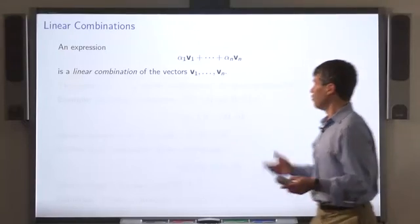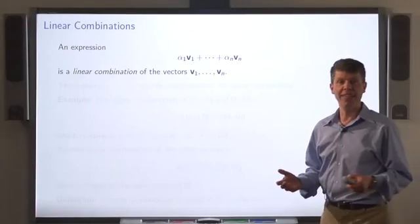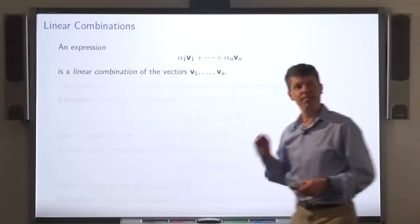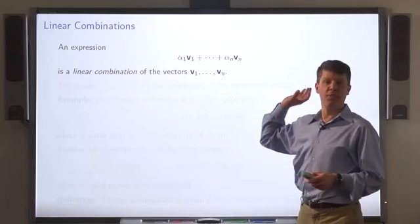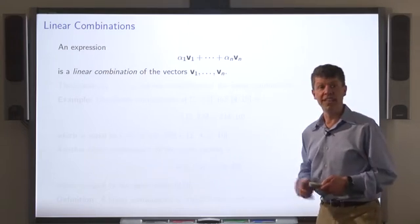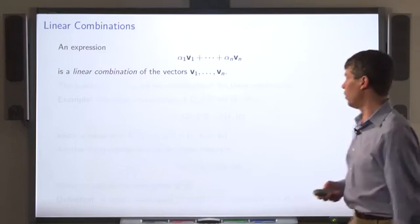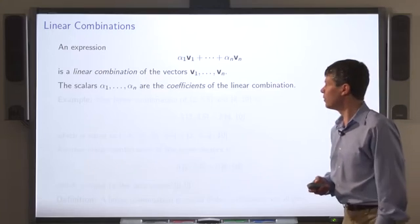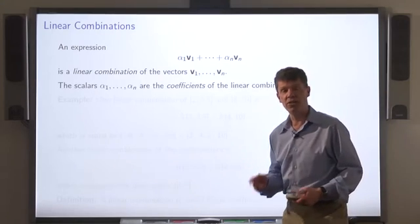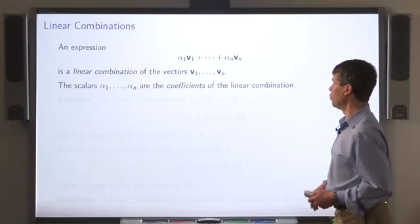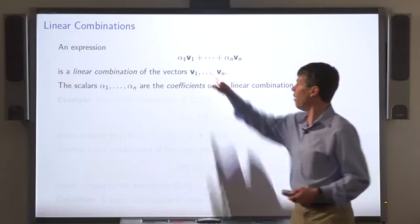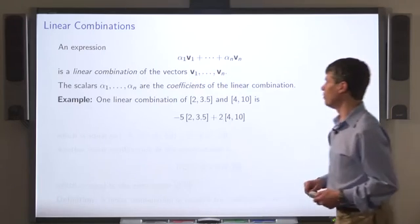Let's say we have a bunch of vectors v1 through vn. We multiply each of them by a scalar and add the results up. That's called a linear combination of the vectors v1 through vn. The scalars in this context are called the coefficients, so the coefficient of v1 is alpha 1.